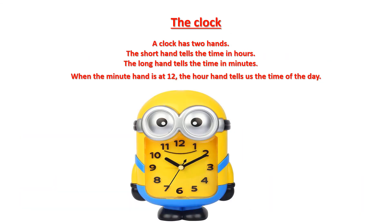The clock. A clock has two hands. The short hand tells the time in hours, and the big hand tells the time in minutes. When the minute hand is at 12, the hour hand tells us the time of the day. You can see the clock in the picture.